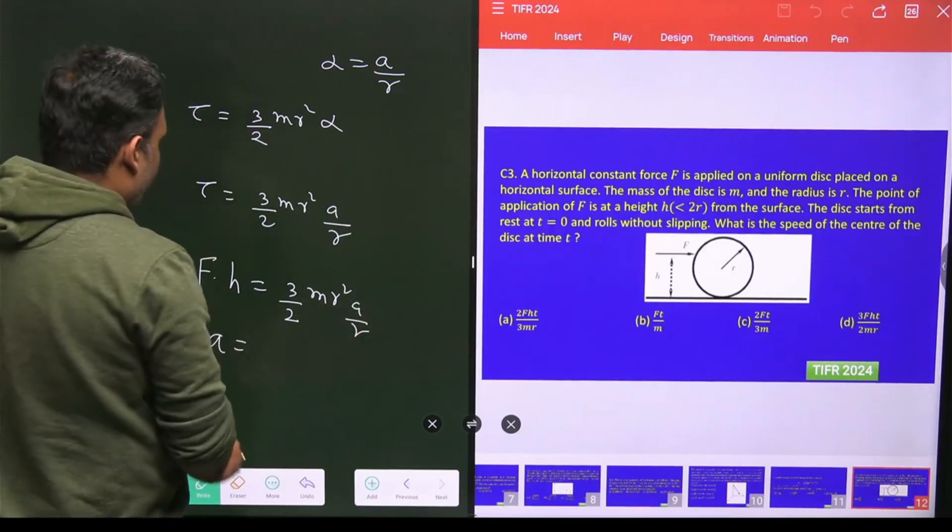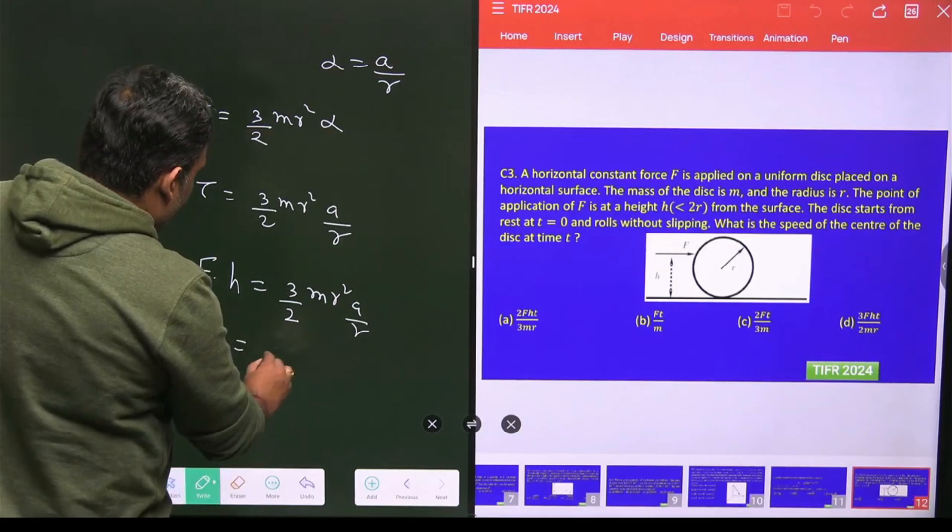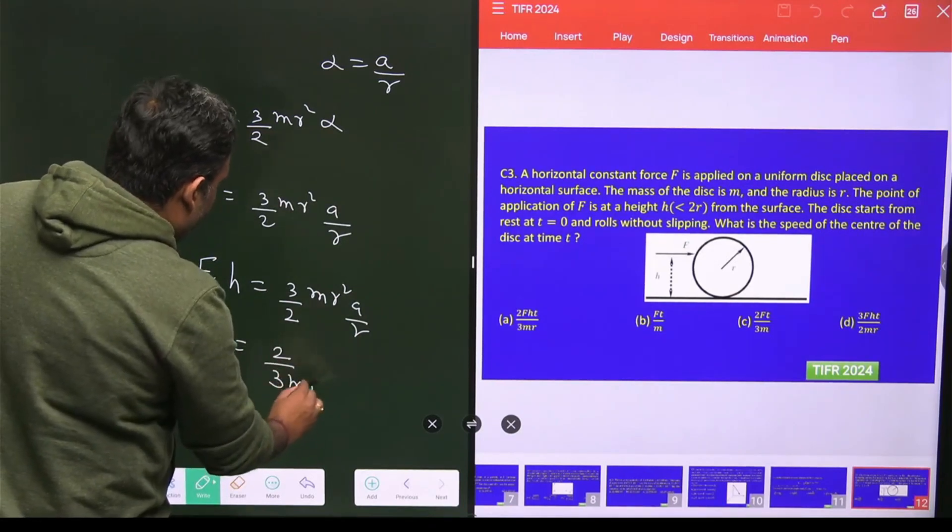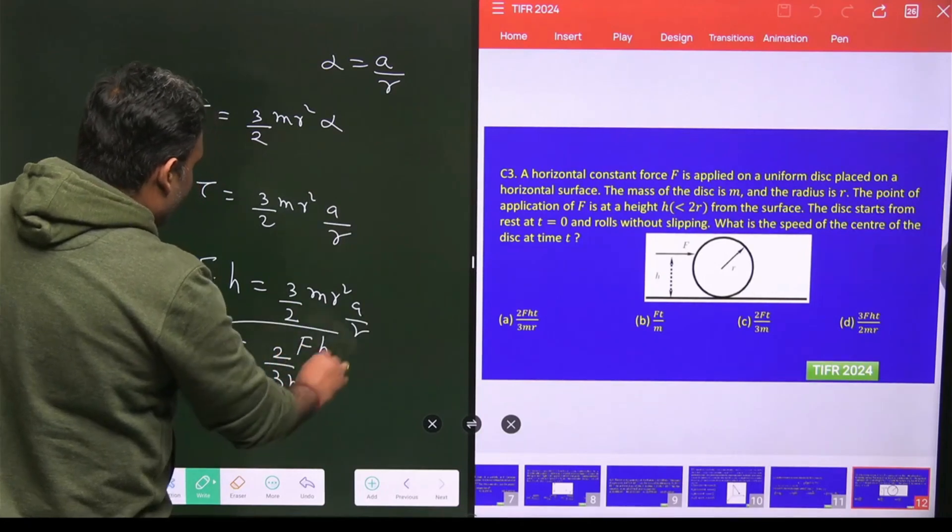And here we can get the value of A. And what is the value of A? A equals 2 by 3 fx by mr. So this is my acceleration.